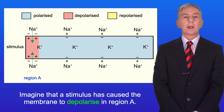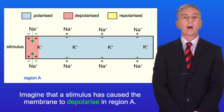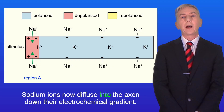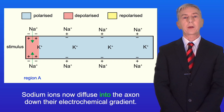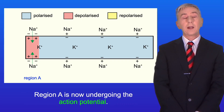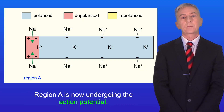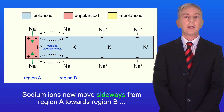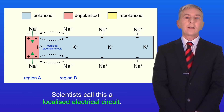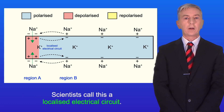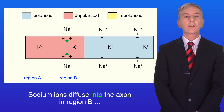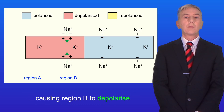Imagine that a stimulus has caused the membrane to depolarize in region A. Voltage-gated sodium ion channels open and sodium ions now diffuse into the axon down their electrochemical gradient, so region A is now undergoing the action potential. Sodium ions now move sideways from region A towards region B, attracted to the negative charge — scientists call this a localized electrical circuit. This causes voltage-gated sodium ion channels to open in region B, and sodium ions diffuse into the axon in region B, causing region B to depolarize.